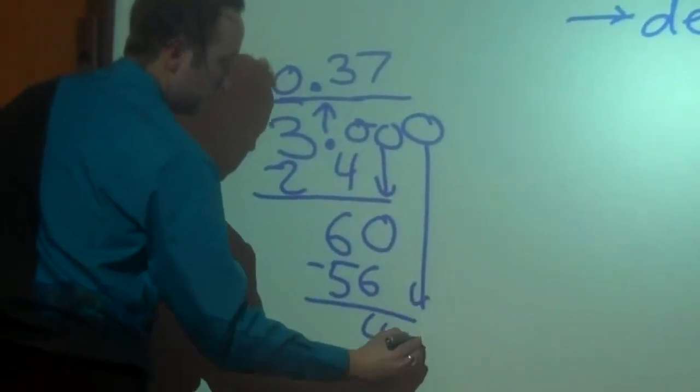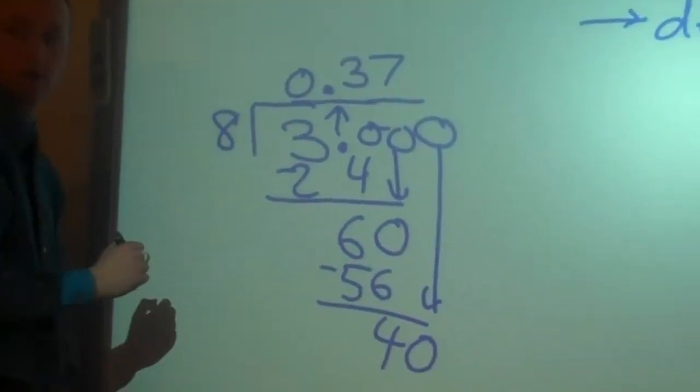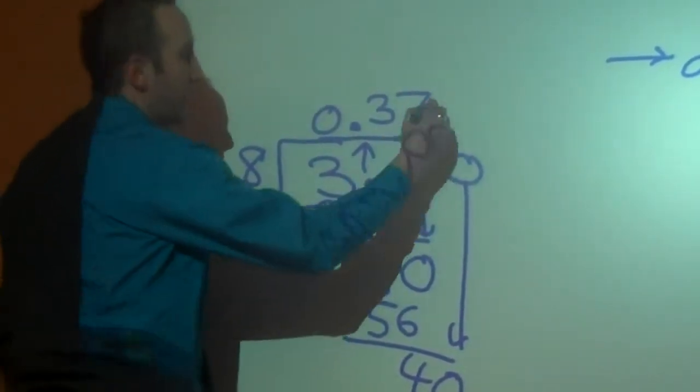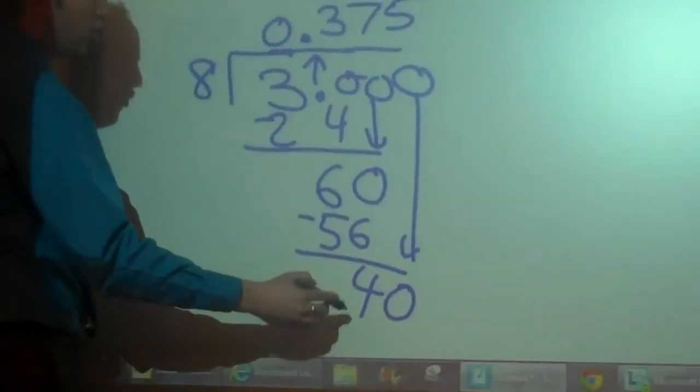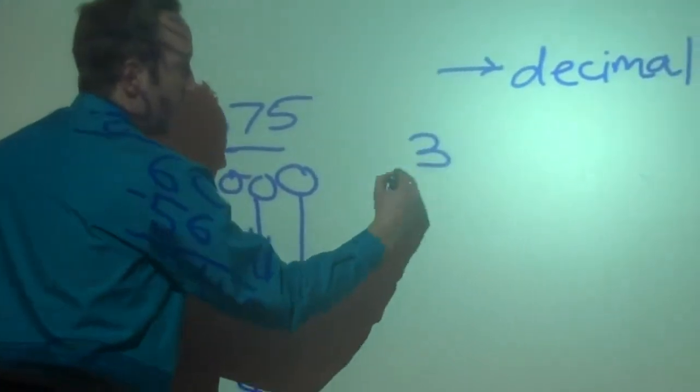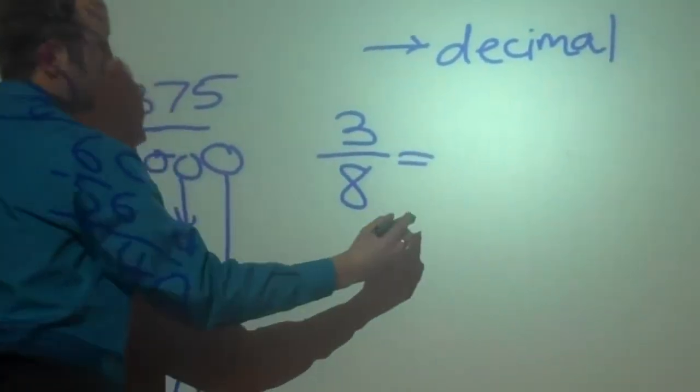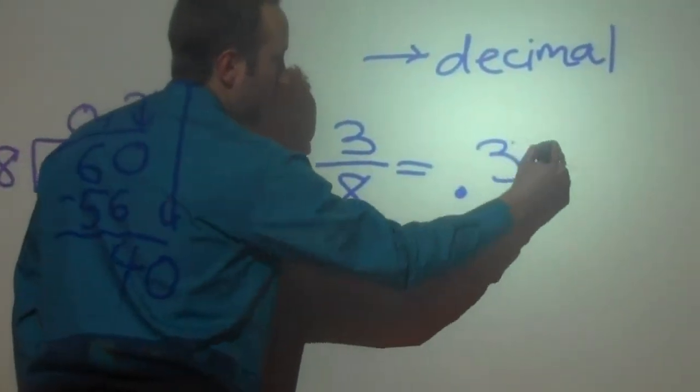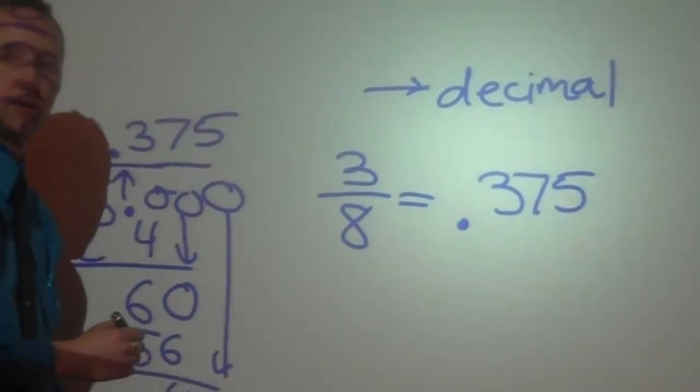Another zero. How many times does eight go into forty? Five. Five times exactly with none left over. So what this means is three-eighths is equal to the decimal point three seven five. And we're not done yet.